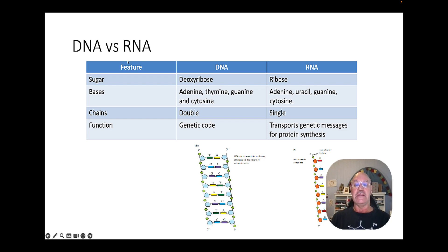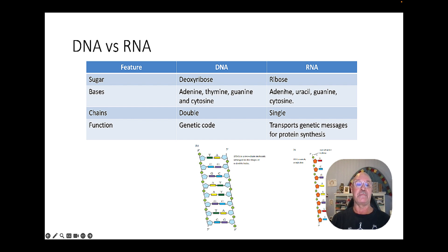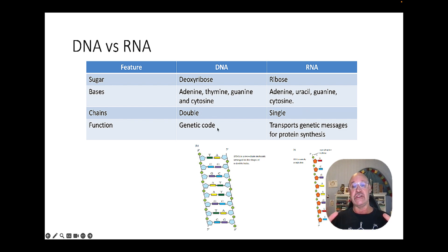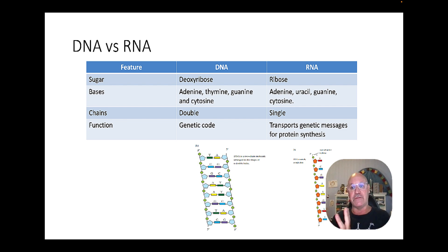A summary of the differences between DNA and RNA: the sugar is deoxyribose in DNA versus ribose in RNA. The bases A, G, and C are the same in both, but DNA has thymine while RNA has uracil. DNA is a double chain; RNA is a single chain. DNA's function is to hold the genetic code, whereas RNA acts more as a transporter of the genetic message.